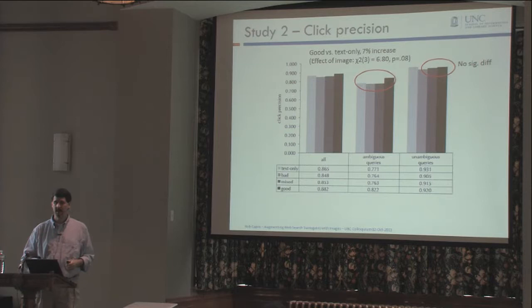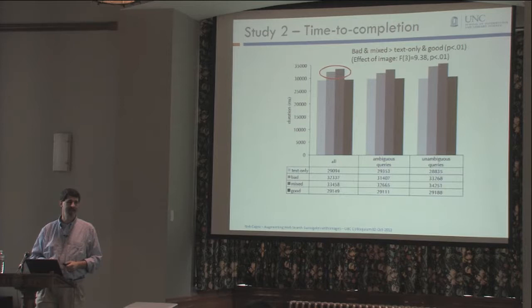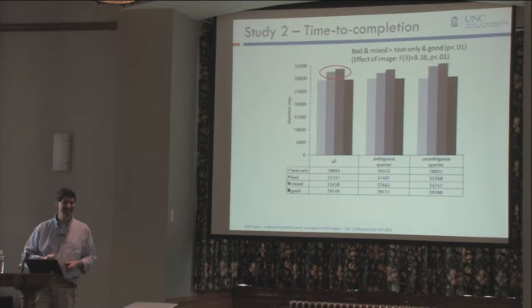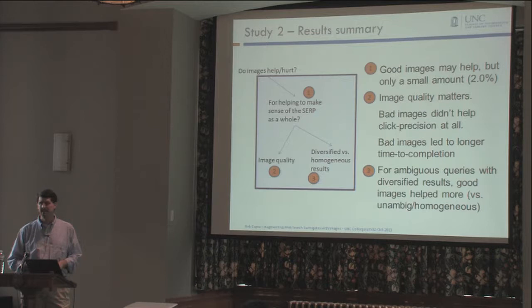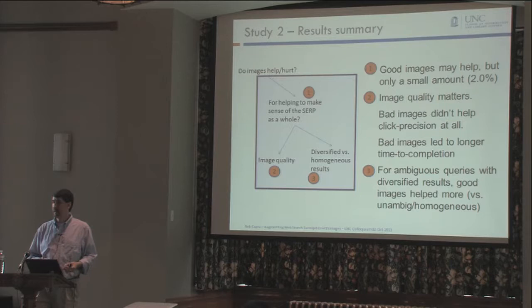Time to completion was really interesting. The good images didn't hurt in the overall SERP, but the bad and mixed images confused people — they were wondering why images unrelated to the page were being shown, leading to bumps in task completion time for bad and mixed conditions. In summary for study two: good images helped just a little bit, though not significantly. Image quality did seem to matter. And for ambiguous queries with diversified results, good images did seem to help more — that was the borderline significant 7% increase.